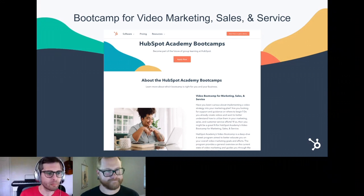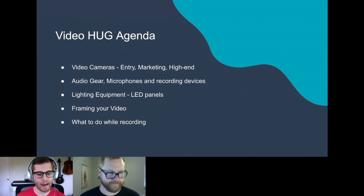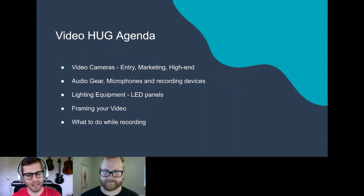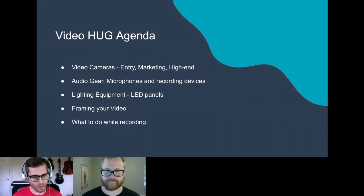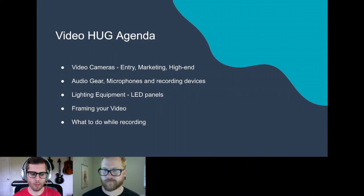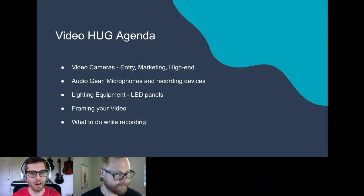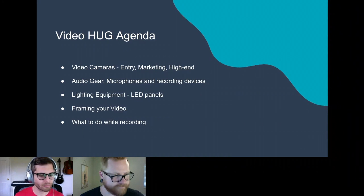Today's agenda: first we'll go deep into video cameras — entry-level, mid-level marketing cameras, and high-end cameras, discussing the differences in what they can achieve. Then we'll get into audio gear — microphones and recording devices specifically — and talk about which microphones to use in which scenarios. Then we'll talk about lighting equipment, mainly LED panels, plus tips on how to improve your lighting and framing. Last, we'll go over tips on what to do while recording so you're not too nervous on camera.